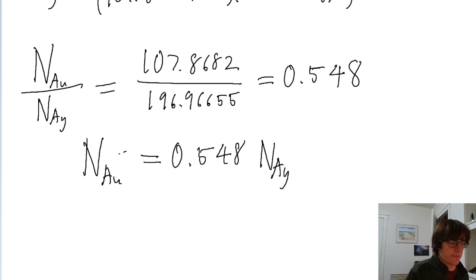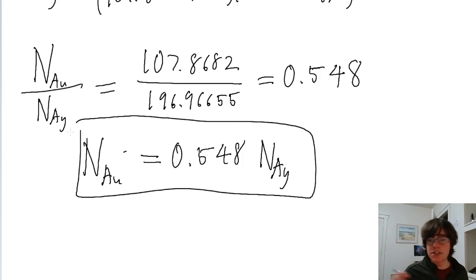That means that the number of gold atoms is equal to 0.548 times the number of silver atoms. So about half. And that is the answer to this problem.